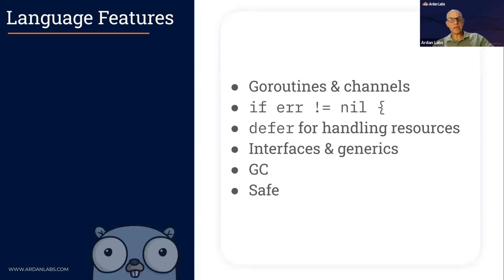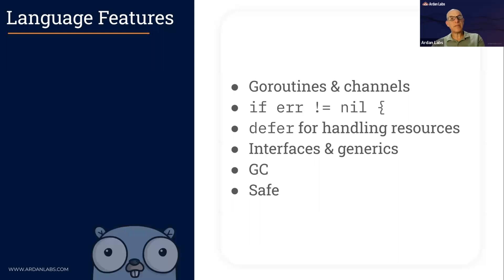Go puts errors front and center. Errors are just values — a function can return more than a single argument, and usually the last one is going to be an error indicator. This line of code — 'if error is not nil' — meaning there was some kind of error, is something developers are going to write a lot. But it's a good thing: it's more robust than exception handling, and it focuses thinking on errors.